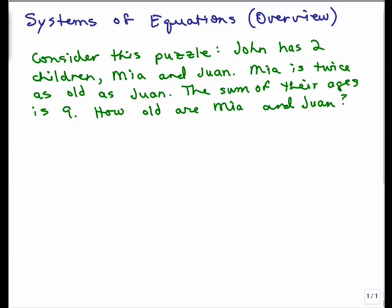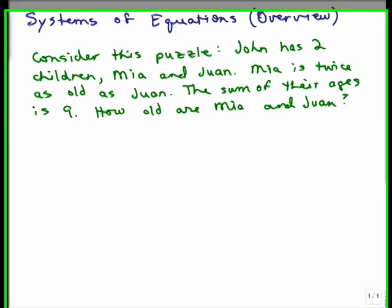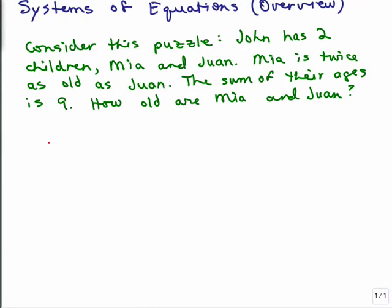You might be able to get this equation by just sort of trial and error, coming up with some possibilities until it finally works. For instance, you could consider some different ages. There's two ways of doing this, sort of like a guessing way. You could pick some ages for Mia and Juan.